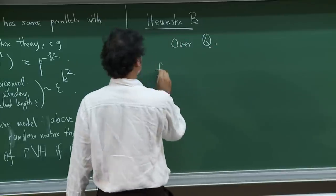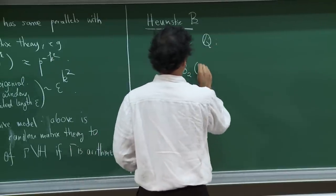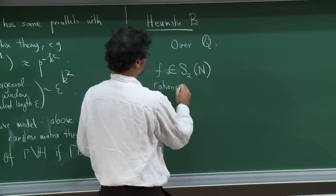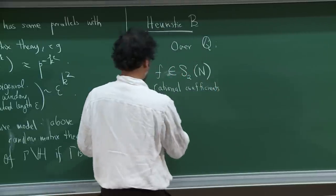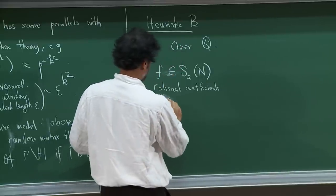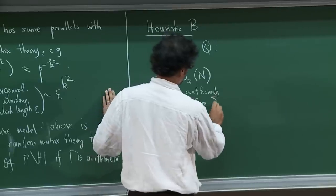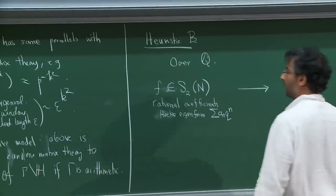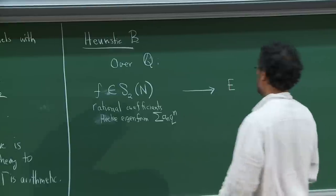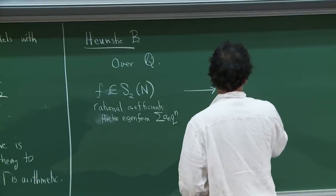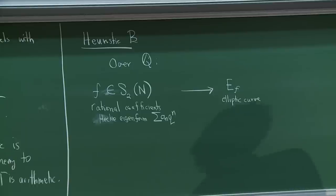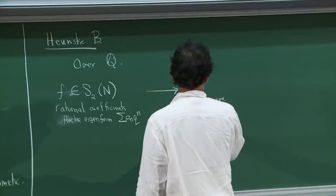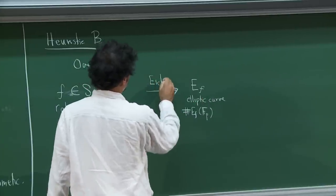If F is a weight 2 holomorphic form of level N with rational coefficients and a Hecke eigenform — looking like the sum of a_n q^n — then Eichler and Shimura made the wonderful discovery that they could associate to F an elliptic curve E_f, which has the amazing property that this a_p is related to the number of points on E_f over F_p: that number is p + 1 - a_p.